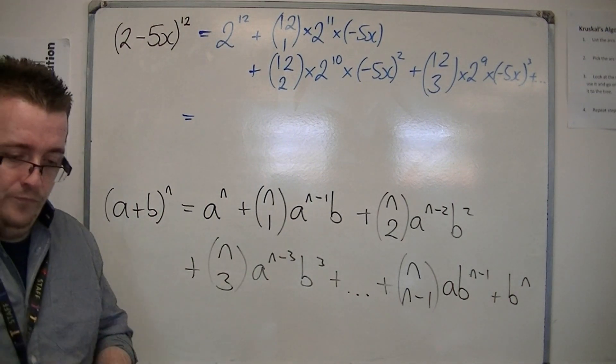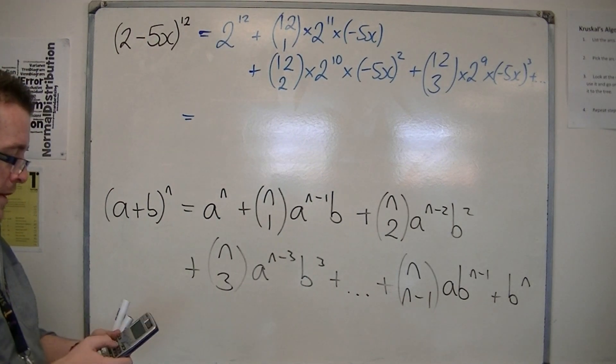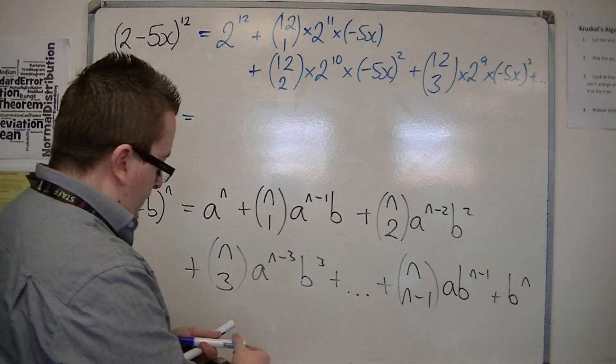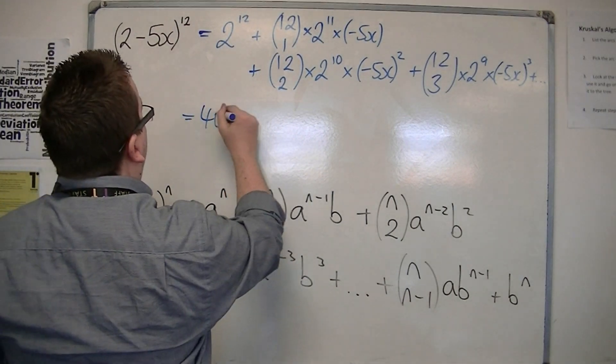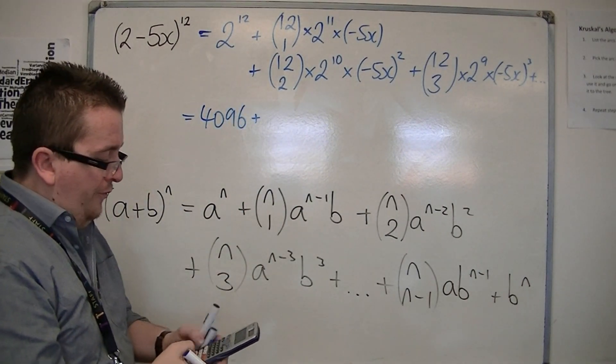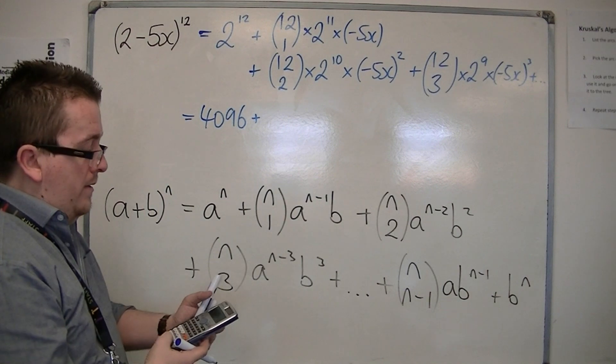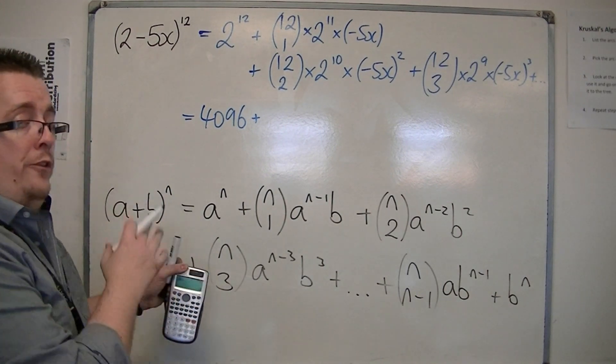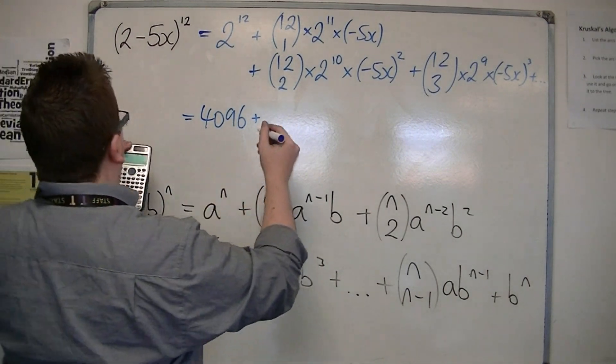So, get our calculator out. $2^{12}$ is 4096. Then we've got 12 choose 1. So, 12 NCR 1. So, it should come up with 12C1 on your calculator. And that's 12.